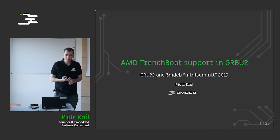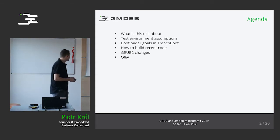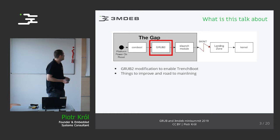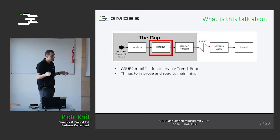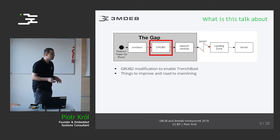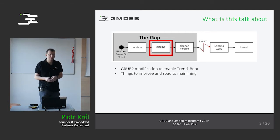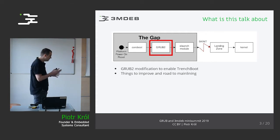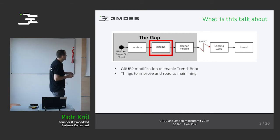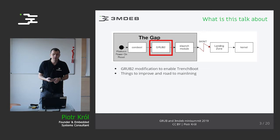Let's discuss AMD Trenchboot support in GRUB2. Trenchboot is an open source DRTM implementation, kind of an alternative to Tboot, but improved and cross-architecture. During this talk we would like to focus on the AMD implementation inside one of the components of the ecosystem, which is GRUB. We would like to discuss GRUB2 modifications that help in enabling Trenchboot.